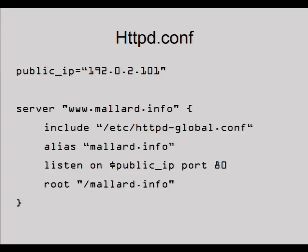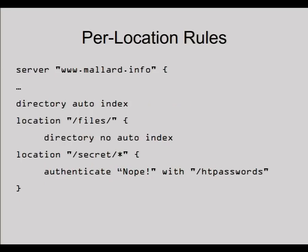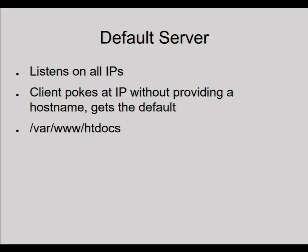HTTPD also lets you do per-location rules. Here we say 'directory auto-index' — if there's no index file in the directory, create one. But in this files directory, don't create an index. And in this secret directory, anyone who tries to access it is required to authenticate against an htpasswd file. HTTPD has a default server that listens on all IP addresses, and if a client doesn't provide a hostname they get the default site in /var/www/htdocs.